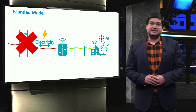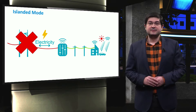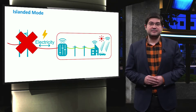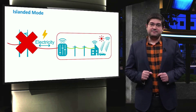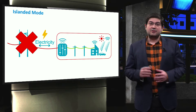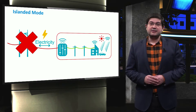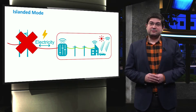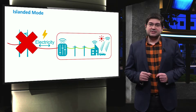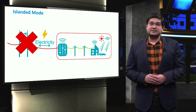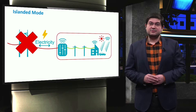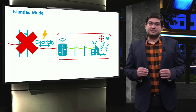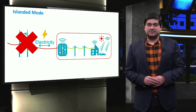When a microgrid is disconnected from the external grid, the frequency and voltage are not controlled anymore by the grid. Therefore, alternatively, one or more electrical components are required to take over the control of frequency and voltage in the microgrid. In this video, we try to address the ancillary services related to frequency and voltage control in microgrids during the islanded operation. Also, we address the islanding process from the grid-connected to the islanded mode.